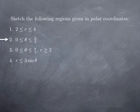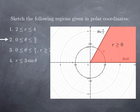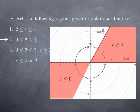What about an interval of values for θ? The region where 0≤θ≤π/3: pointing in directions 0 and π/3 gives two half-rays. Values in between correspond to this angular sector, but that's when r is non-negative. If we also include the opposite direction (r negative), we obtain both sides of the sector — a cone with vertex at the origin.